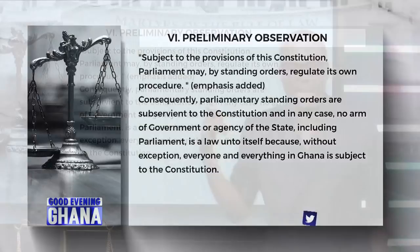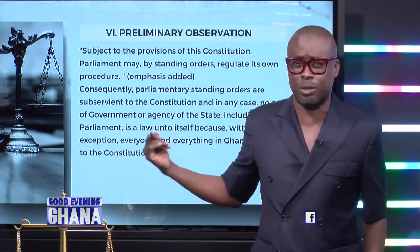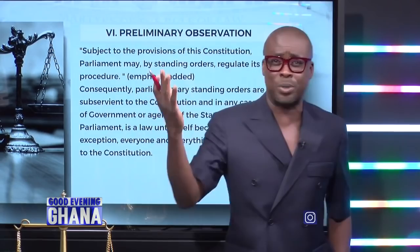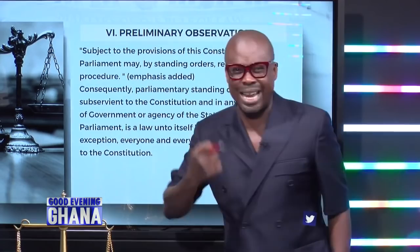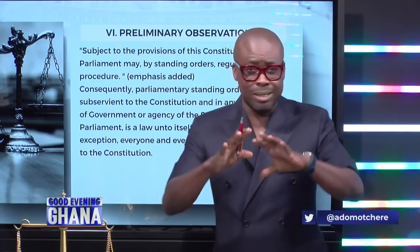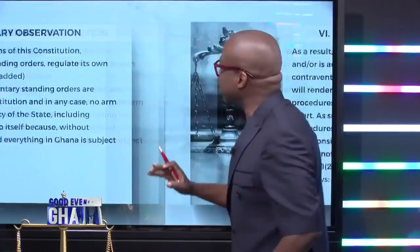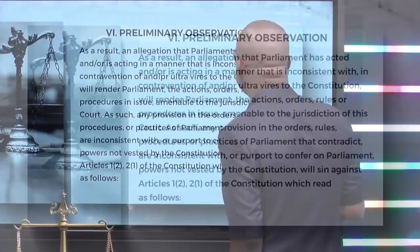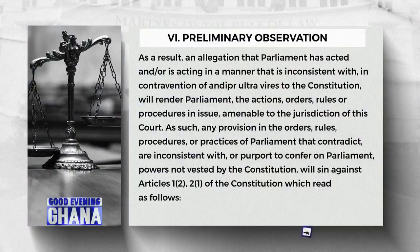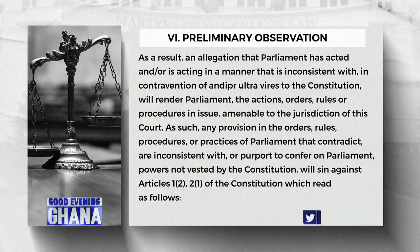The matters before the court extend to the interpretation of Articles 102 and 104, the combined effect thereof, and the meaning of those articles can only be determined by the court. An allegation that parliament has acted in a manner inconsistent with, in contravention of, and ultra vires to the constitution will render parliament's actions, orders, rules, or procedures amenable to the jurisdiction of this court. Any provision in the orders, rules, procedure, or practice of parliament that contradicts or is inconsistent with the constitution will violate Articles 1 and 2.